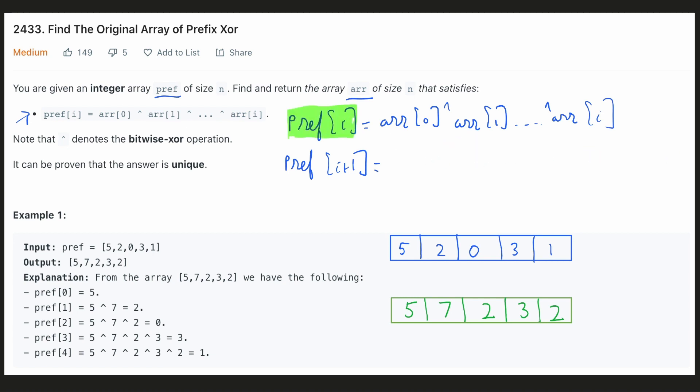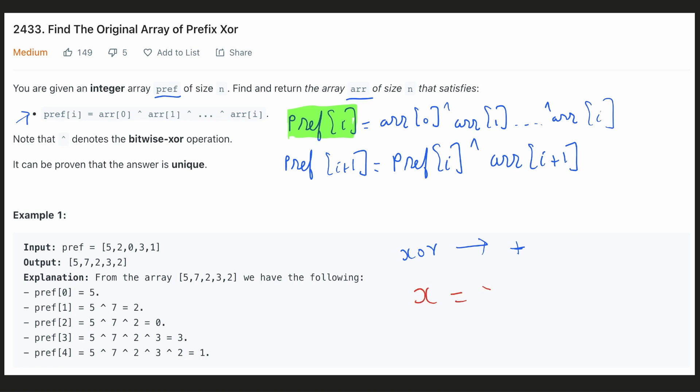Hence this could be rewritten as. Now let's try to rearrange this equation so that we could generate the output array just from the prefix elements. Let's consider a scenario where instead of xor operation there was just an addition operation. Let's suppose we have an equation x is equal to y plus z.